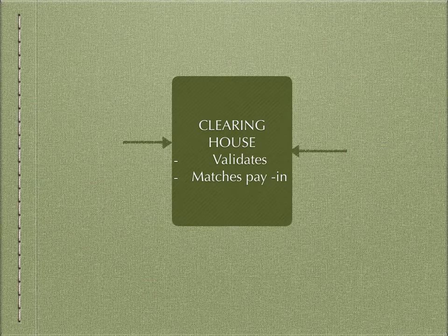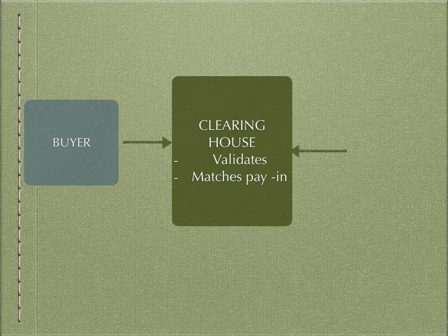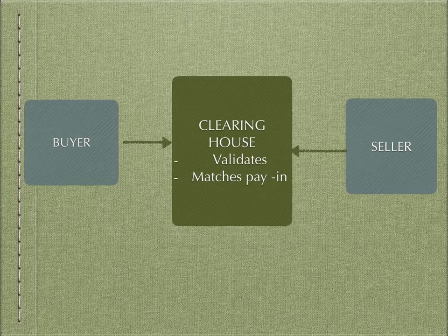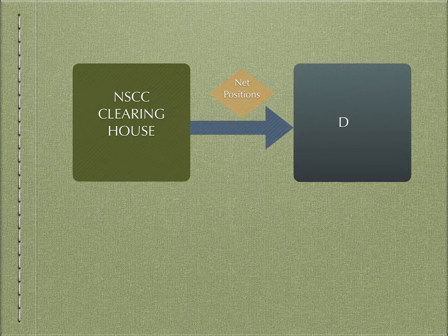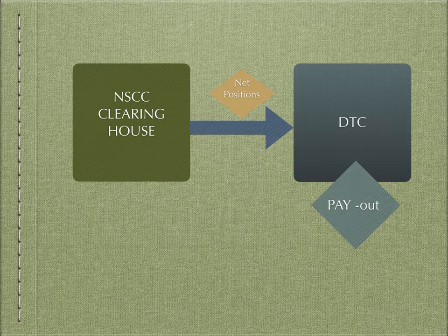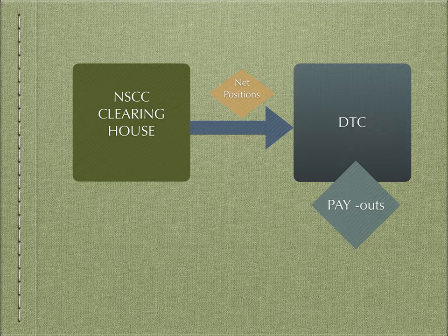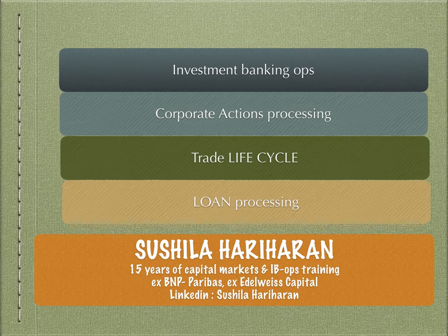The clearing house validates trade details with those received from the stock exchange, matches payments received from the buyer with those received from the seller, and in the process the counterparty risk is reduced. The NSCC nets out the positions between buyers and sellers and provides the details of net positions to the depository — which in the United States is the DTC, the Depository Trust Corporation. The DTC then manages the payouts to the counterparties. So first, the clearing house collects pay-ins, then passes the net positions to the DTC, and the DTC manages the payouts.